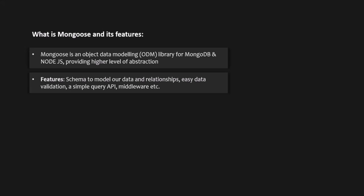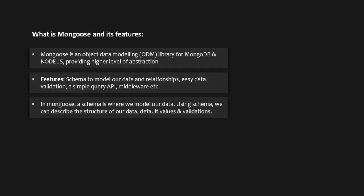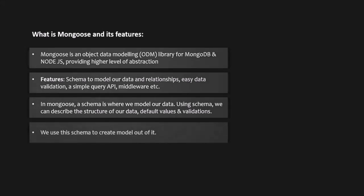In Mongoose, a schema is where we model our data. Using a schema, we describe the structure of our data, default values, and validations. We then take this schema and create a model out of it. A model is basically a wrapper around the schema which allows us to actually interface with the database in order to perform CRUD operations. So let's go ahead and create a simple schema and model.